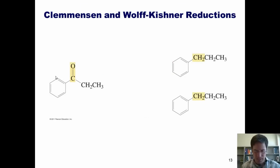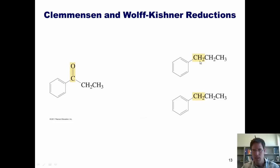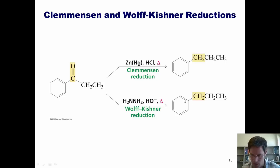Two reactions that consistently reappear in standardized exams are Clemmensen and Wolff-Kishner reduction reactions. If I want to replace a carbonyl—a carbon double bonded to an oxygen—with a fully reduced carbon single-bonded to two hydrogens, I can subject it to Clemmensen reduction conditions, which is zinc-mercury amalgam and HCl, or Wolff-Kishner reduction conditions, which uses hydrazine and hydroxide, fully reducing it to the desired alkane.